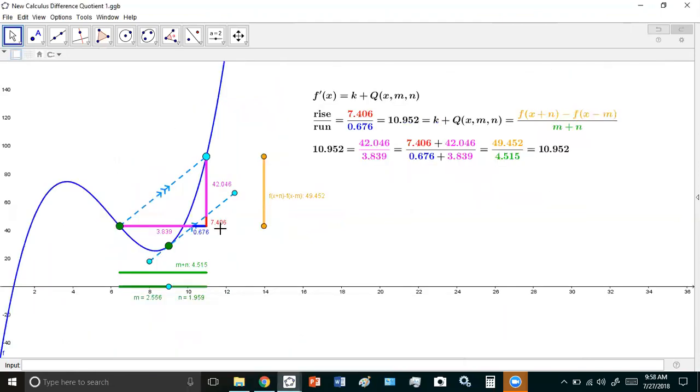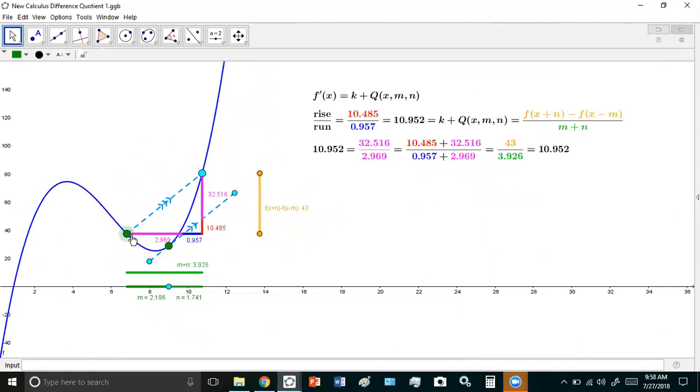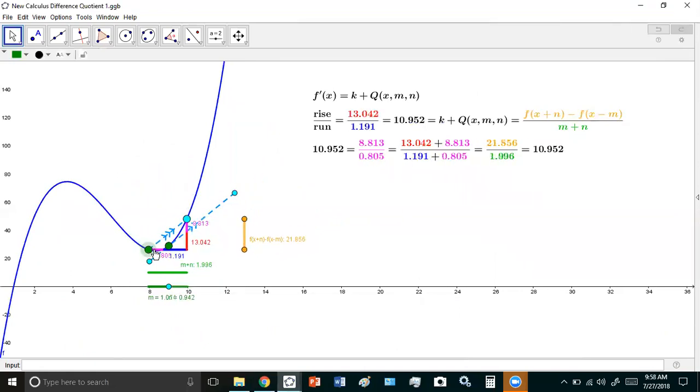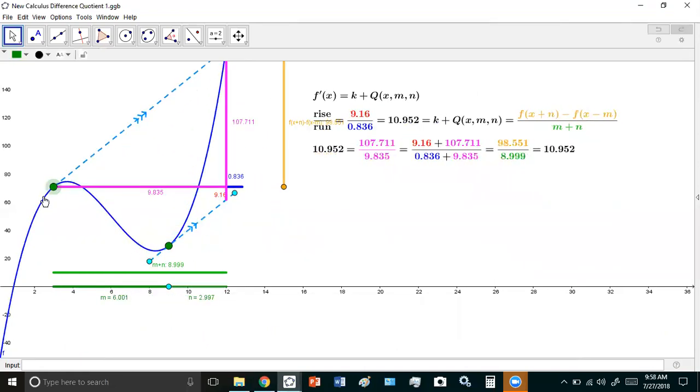So here's a cubic. And notice that I don't even care about what the function is. Watch this, 10.952 is approximately the slope of the tangent line. You see it never changes. Never ever ever. See that?